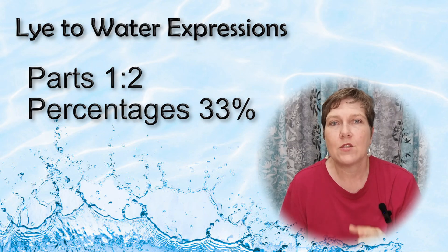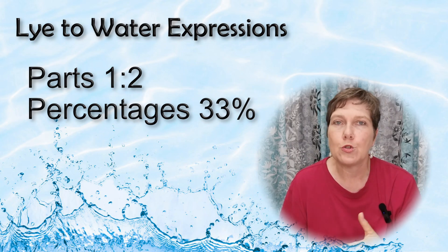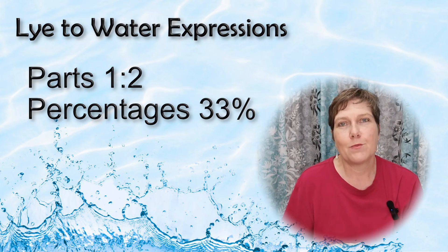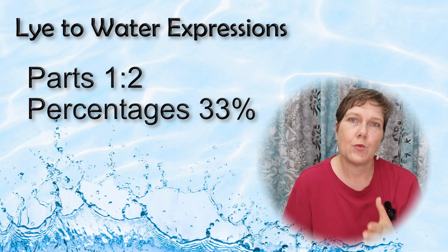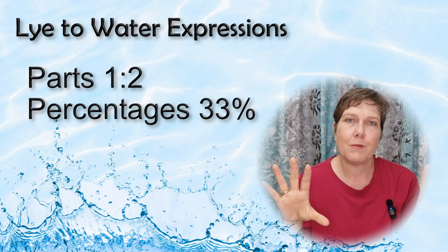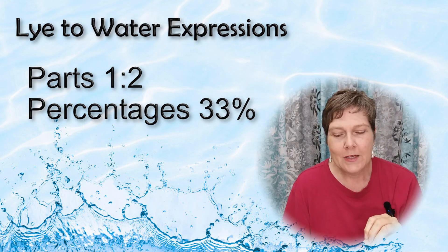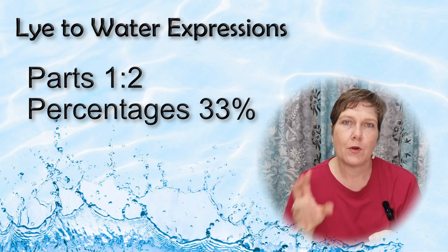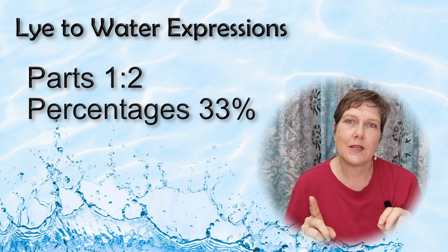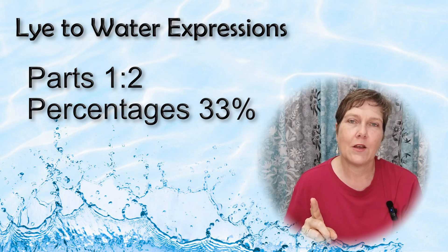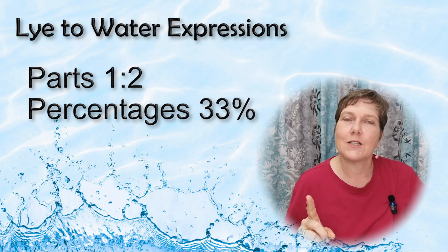The lye-to-water ratio can also be expressed in two different ways, which can make it a bit more confusing. You can express it in parts - one part lye to one part water, or one part lye to two parts water. But it can also be expressed in percentages. A one-to-one ratio is 50% lye and 50% water. A one-to-two ratio is 33% lye and 66.67% water. The percentage always refers to the amount of lye in the solution.